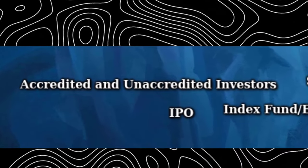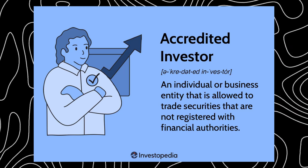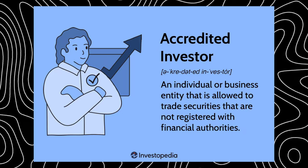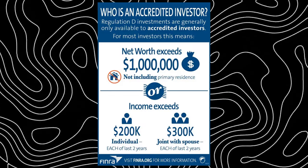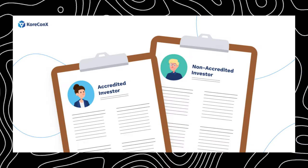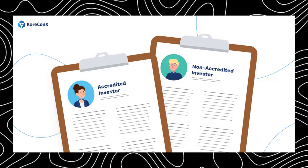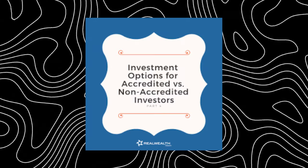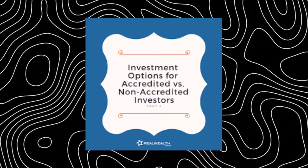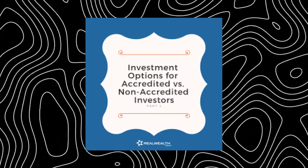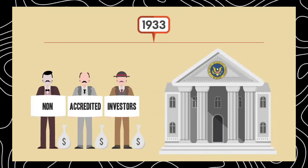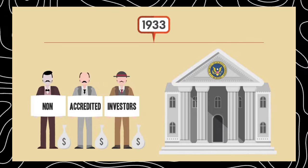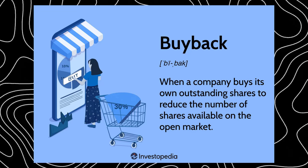Accredited and unaccredited investors: accredited investors are typically high-net-worth individuals with access to investing opportunities unavailable to the public, such as hedge funds and private equity. Requirements include a net worth of over $1 million (excluding your home) and a proven annual income of over $200,000 for the past two years. To be verified, you must submit documents like bank statements and tax forms. Unaccredited investors don't meet these requirements. This distinction, implemented by the SEC, is designed to protect most investors from high-risk investments.